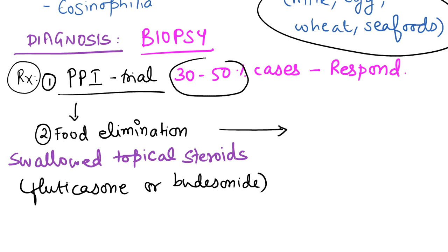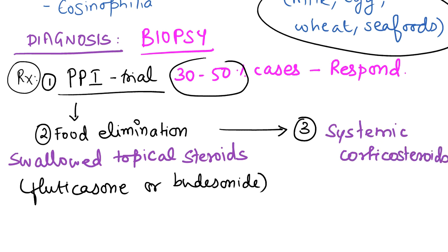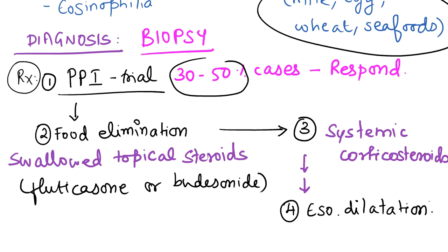If the patient is still not responding — even to food elimination and topical steroids — then the third step is systemic corticosteroids. In very advanced cases, due to intense esophagitis and inflammation, patients can also develop strictures or a narrow-caliber esophagus. In this set of patients, the treatment advised is esophageal dilation. So remember the stepwise treatment: PPI trial → food elimination and swallowed topical steroids → systemic steroids → esophageal dilation.